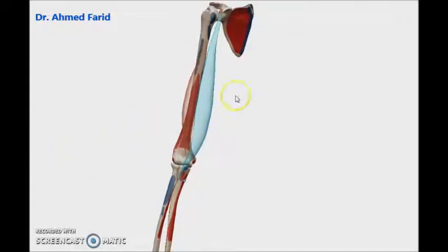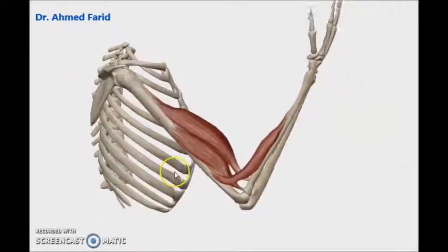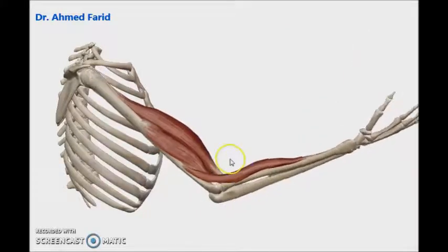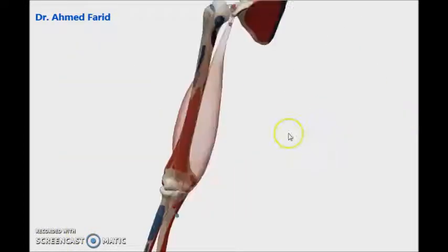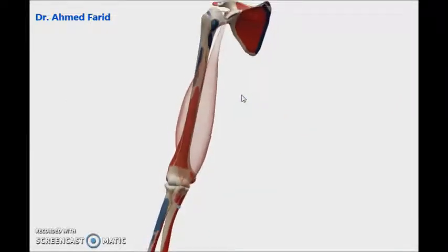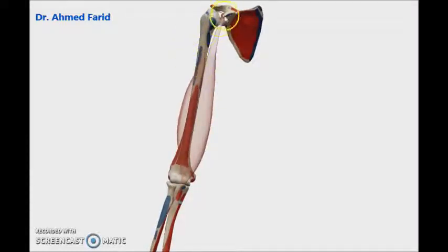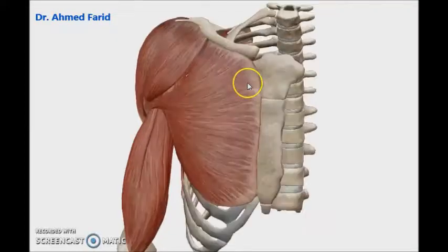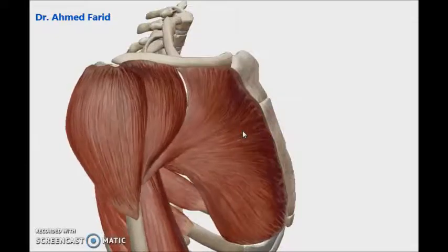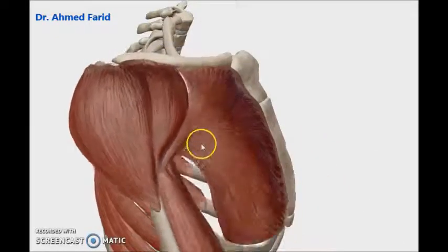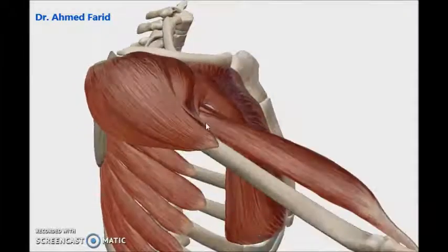The biceps has two heads and crosses anterior to the elbow joint, so the main action is flexion of the elbow joint. It also crosses anterior to the shoulder joint, so it can perform flexion of the shoulder joint as well. Flexion of the shoulder joint is performed by pectoralis major, anterior fibers of deltoid, coracobrachialis, and biceps brachii, as all these muscles cross anterior to the shoulder joint.